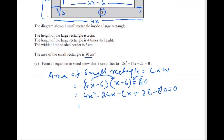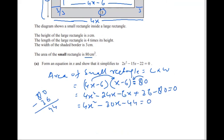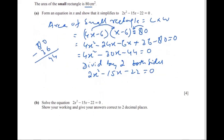In the next step: 4x squared remains the same; minus 24 and minus 6 combine to give minus 30x; and plus 36 minus 80 gives minus 44, equal to 0. Now the whole equation can be divided by 2 on both sides, giving 2x squared minus 15x minus 22 equals 0. So it is shown.